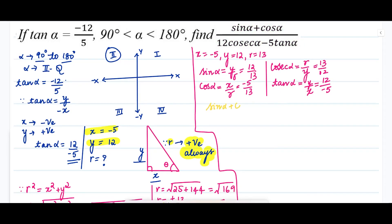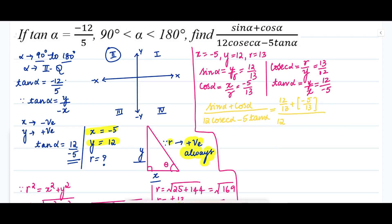Now we substitute into the expression (sin α + cos α) / (2 csc α - tan α). The numerator becomes 12/13 + (-5/13). The denominator becomes 2 × (13/12) minus 5 × (12/(-5)). In the denominator, the 12s cancel and the 5s cancel, simplifying the expression.